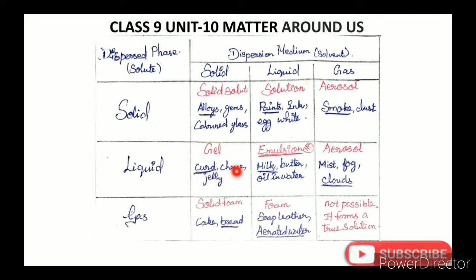Gel examples are curd and cheese. Emulsion is very important — examples are milk, butter, oil, and water. Liquid in gas gives mist, fog, and clouds.